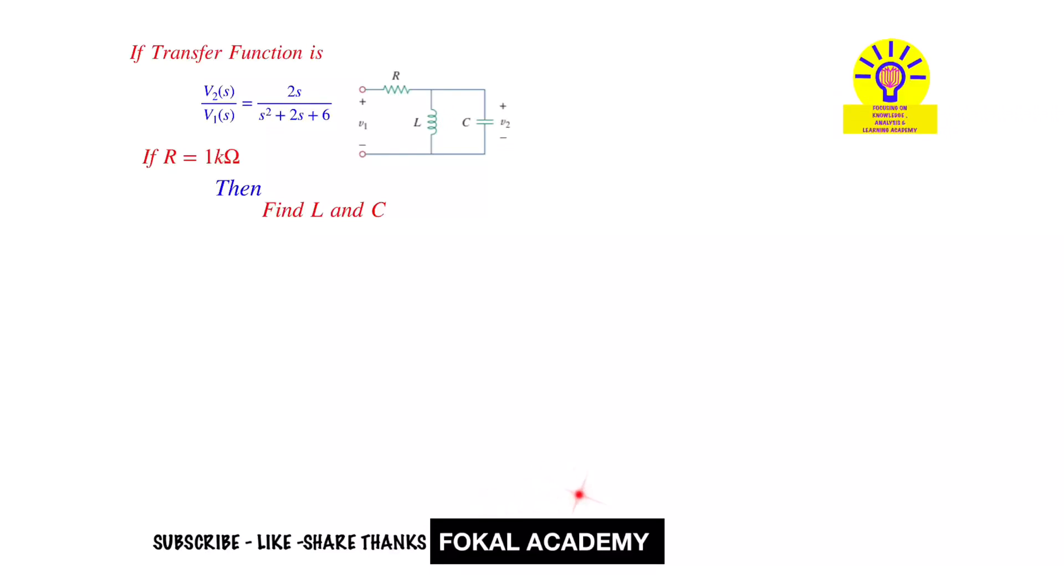Hi everyone, welcome to Focal Academy. See this problem here, one transfer function is given: V2(s)/V1(s) = 2s/(s² + 2s + 6). This is a transfer function for the given RLC circuit. Here no value is given, only the resistance value, 1 kilohm. Then how can you find the remaining values, L and C? This is the problem.